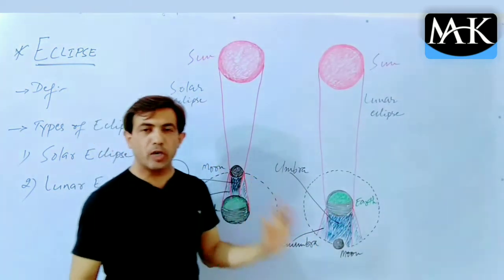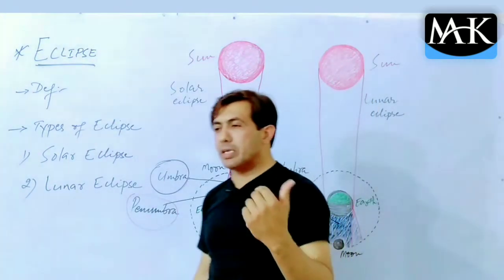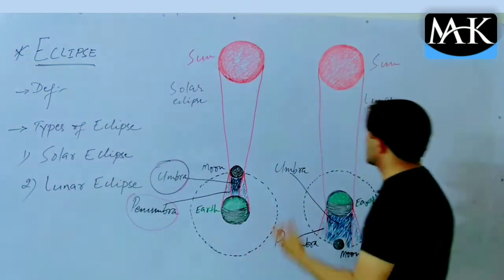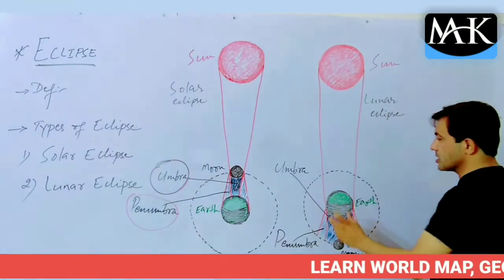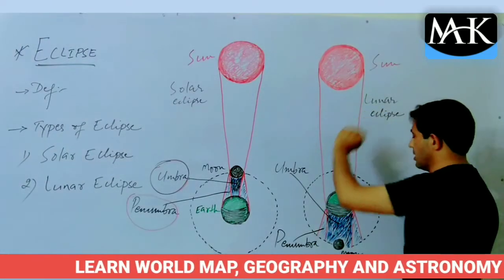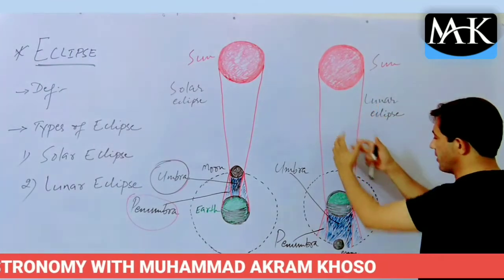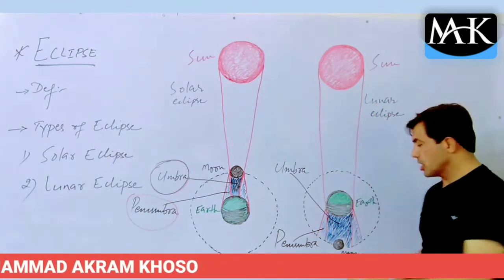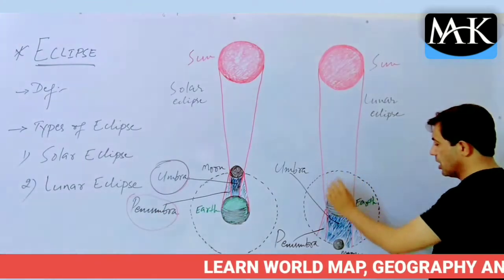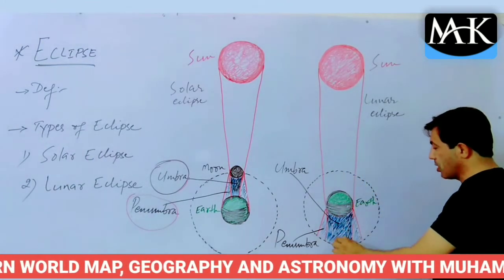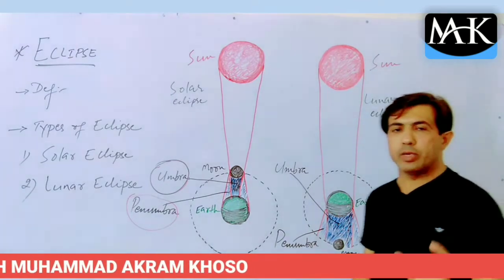As already mentioned, satellites like the moon and other planets are not self-luminous — they look bright because they reflect the light of the sun. So the moon looks bright due to the sun's light. When the earth comes in between and stops the sun's radiations from reaching the moon, there is disappearance and obscuring of the moon. When the moon becomes dark or disappears, that phenomenon is known as the lunar eclipse.